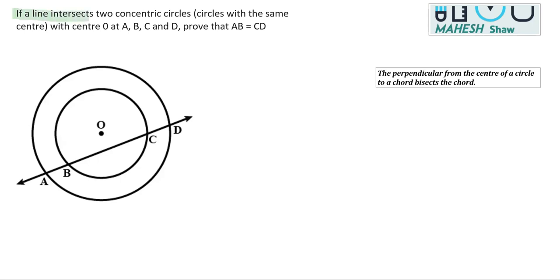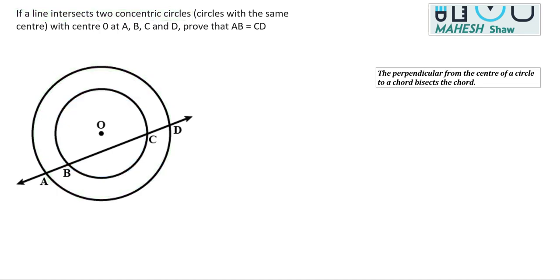In this question, a line intersects two concentric circles. Concentric circles are two circles with the same center — this is one circle and this is the other circle. They have the same center but different radii. There is a line intersecting the circles at four points: A, B, C, and D.